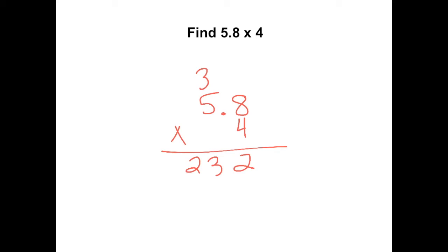Now to know where the decimal goes in our answer, we have to count how many numbers are behind the decimal where we multiplied. There's one number behind the decimal here, so we should have one number behind our decimal in our answer. So our answer is 23 and 2 tenths.